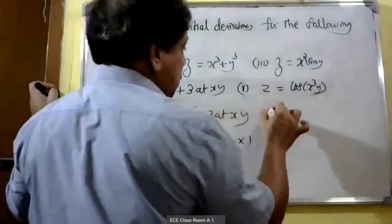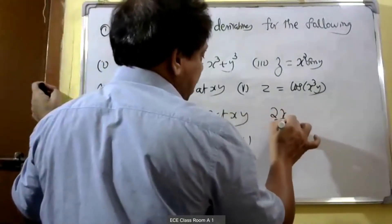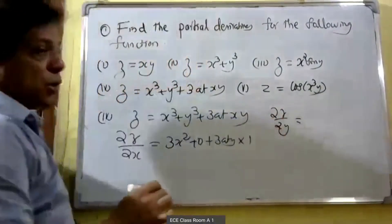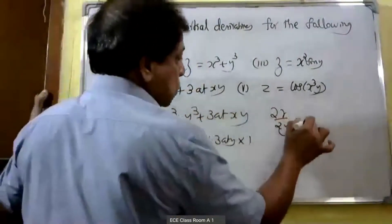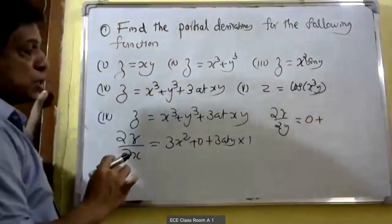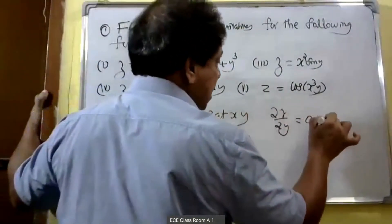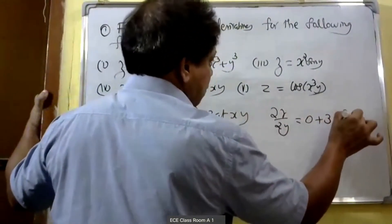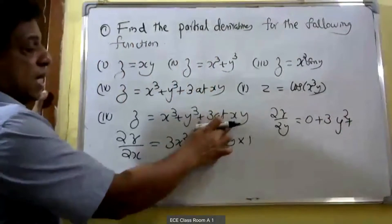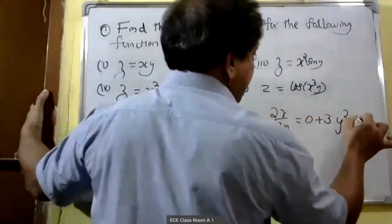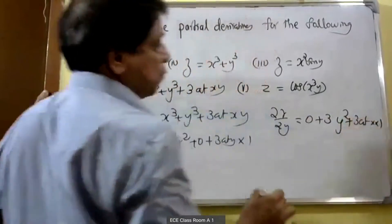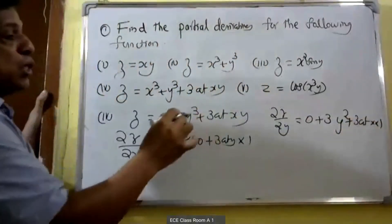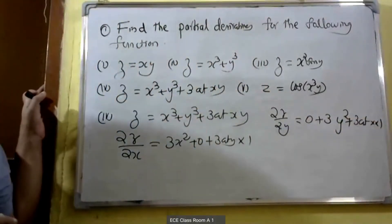When partially differentiating with respect to y, ∂(x³)/∂y is equal to 0, x³ is a constant. Derivative of y³ is equal to 3y². For 3axy, x is constant, so 3ax into 1. Therefore ∂z/∂y is equal to 3y² plus 3ax.